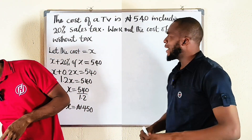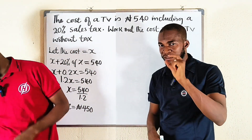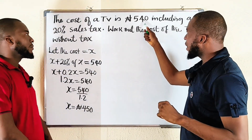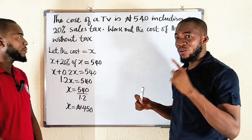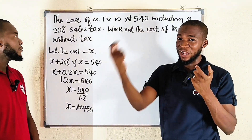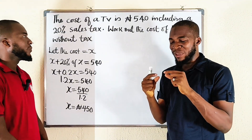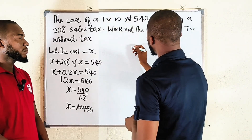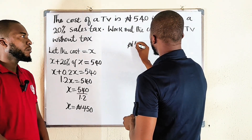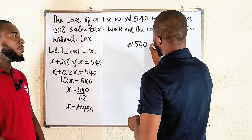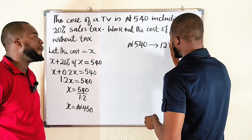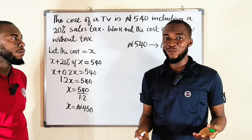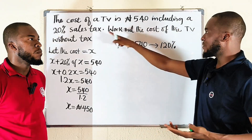You should know that the cost of the TV is 100%. What we have here is not just the cost of the TV — rather it is the cost of the TV including an extra 20%, making 120%. Therefore this amount, 540, represents 120%, including the 100% for the TV and an extra 20% tax.